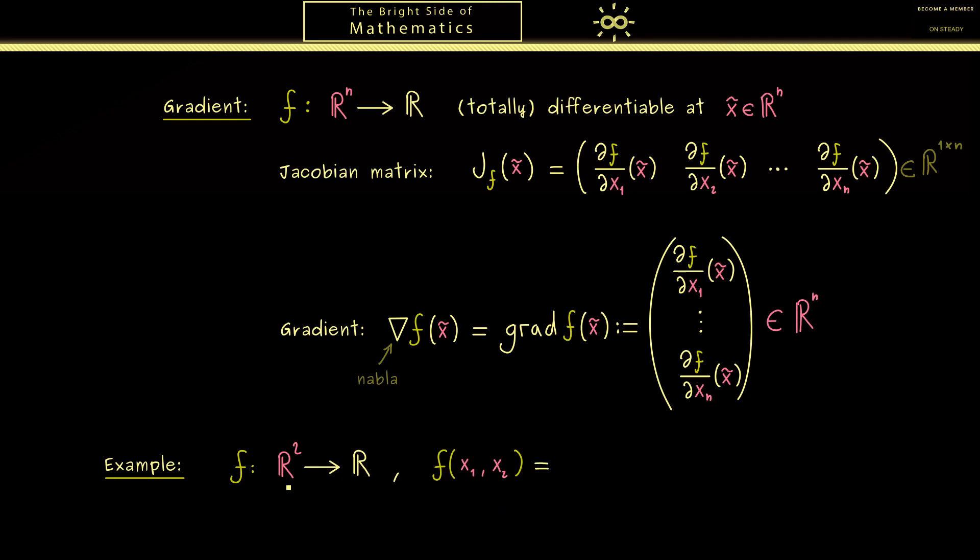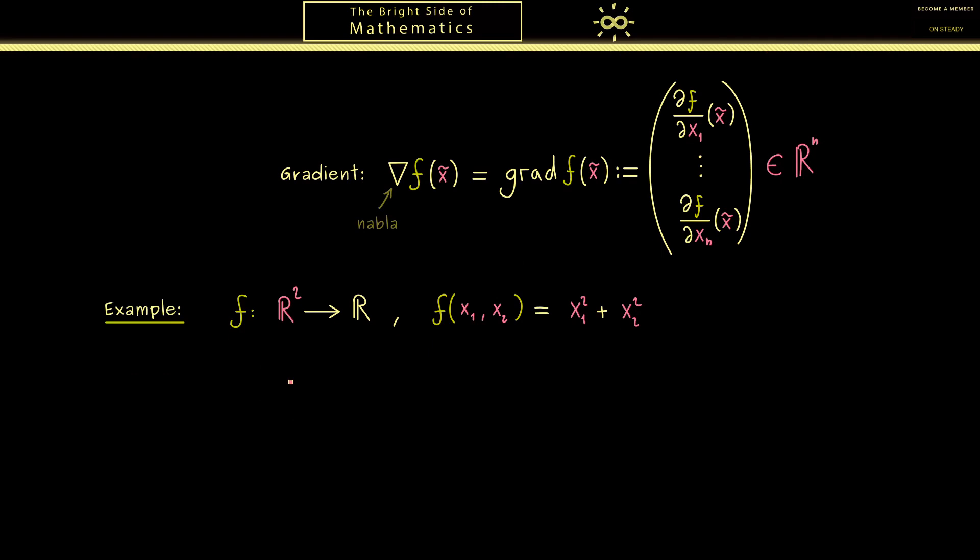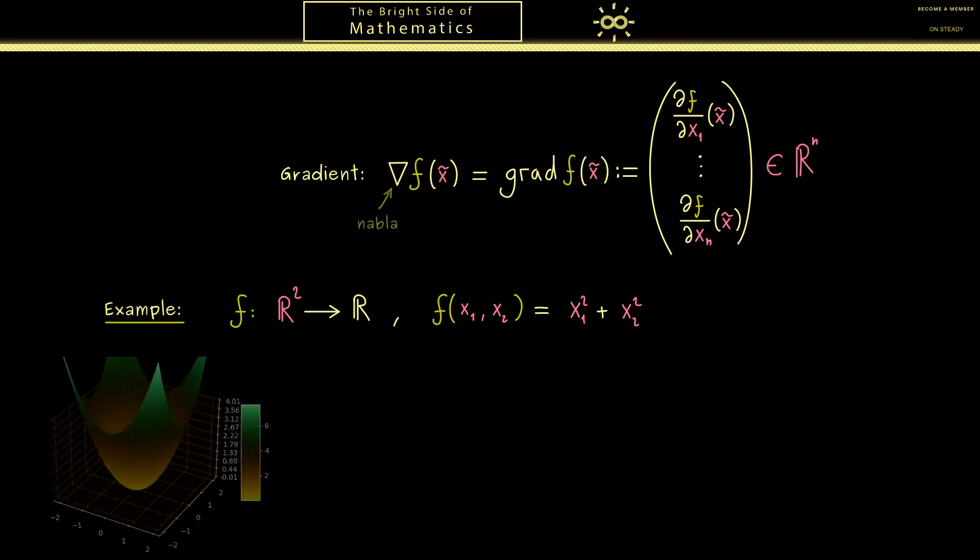So here we have two variables and we can write the function as f(x₁, x₂). And then the resulting number should be given by x₁² + x₂². So you see it's not so complicated and we know it's totally differentiable at every point in the domain. Now the first thing I want to do now is to visualize the graph of the function again with Python.